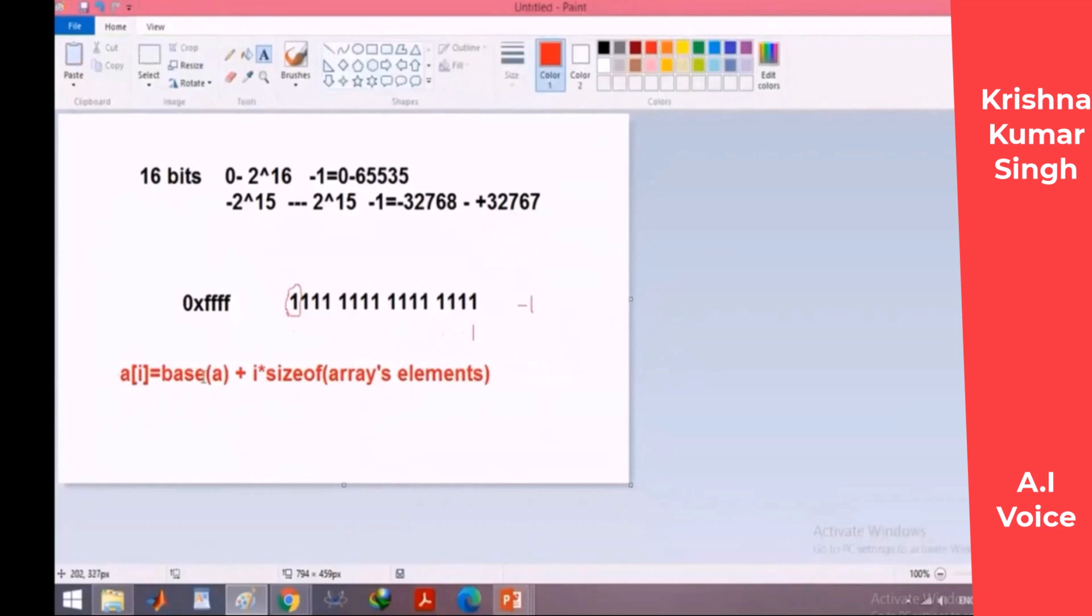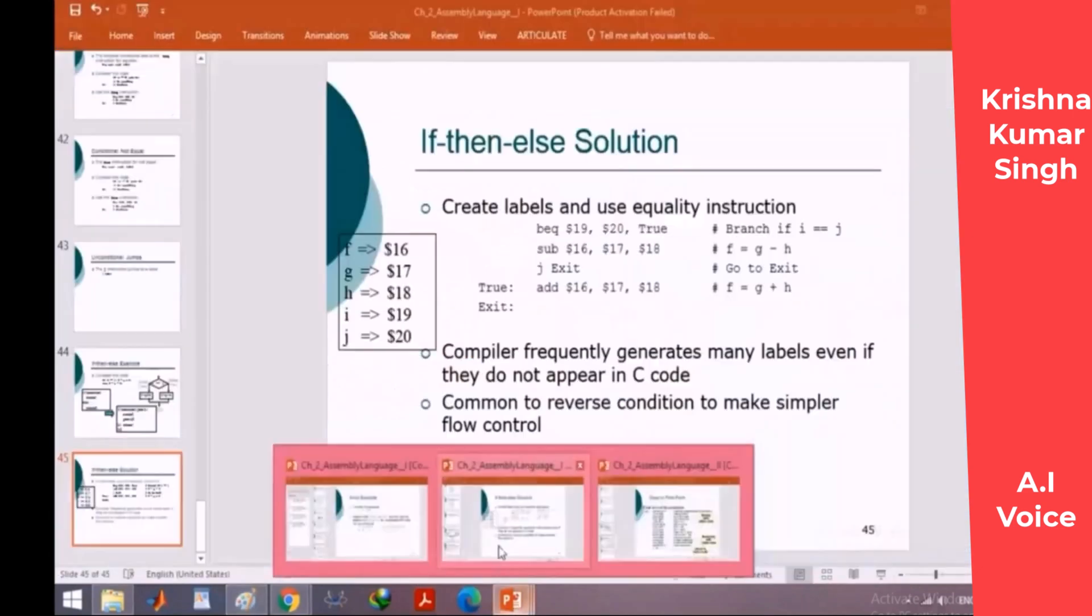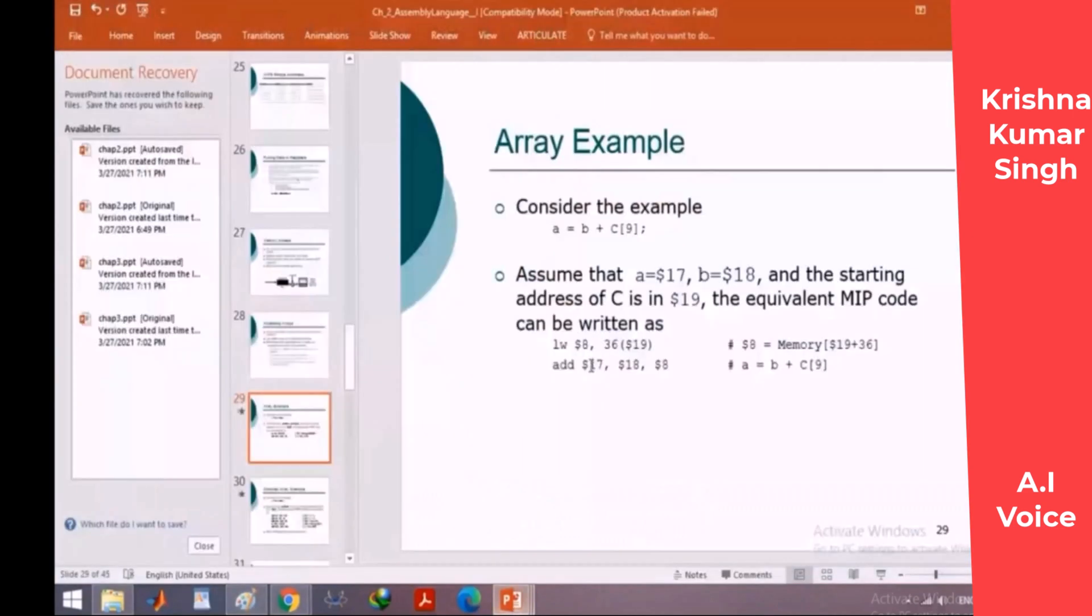In MIPS you have to perform this operation in your code. So since I know that every element in my array takes one word or 4 bytes, c[9] will be computed at the start address of c plus 9 times 4, or 36. As you can see...